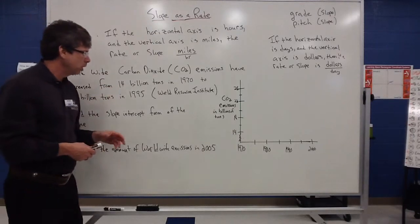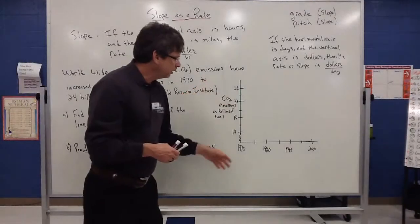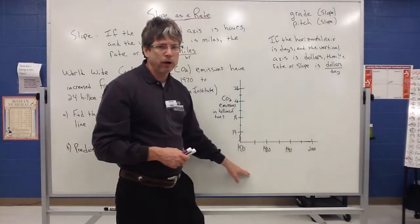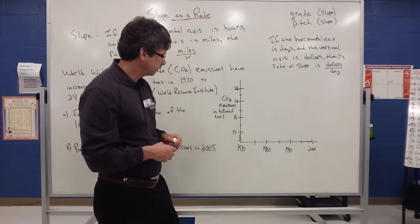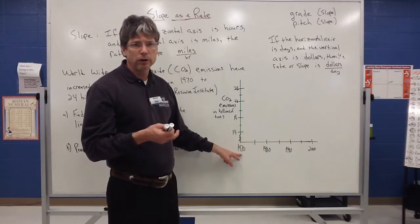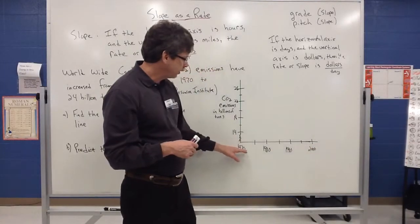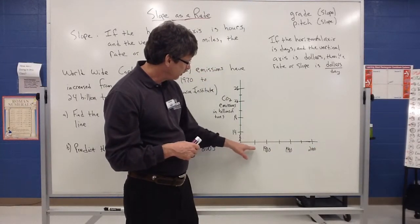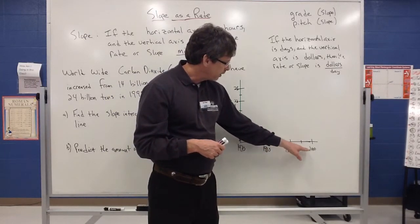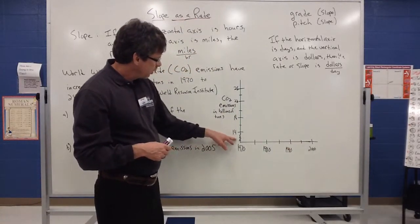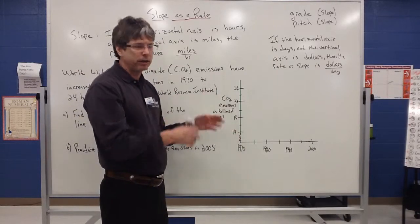So using this information, we're going to try to find the slope intercept form of the line. So we've got our axes. Notice that the horizontal axis is going to be our years, and our vertical axis is going to be the CO2 emissions. Notice that we didn't actually start at zero. Our origin actually started at 1970. So we can create any kind of scale we want. So I started at 1970. Looks like we're going to count by fives.